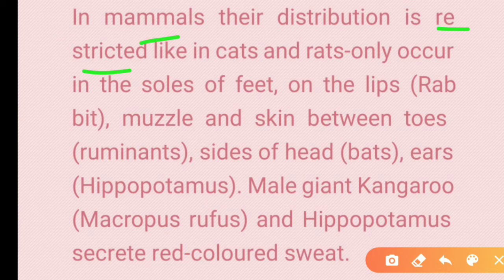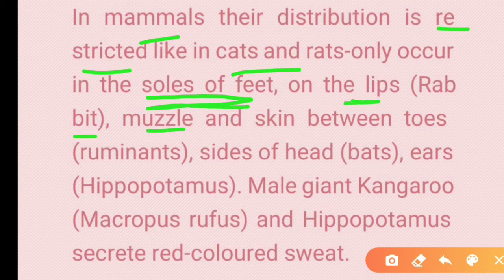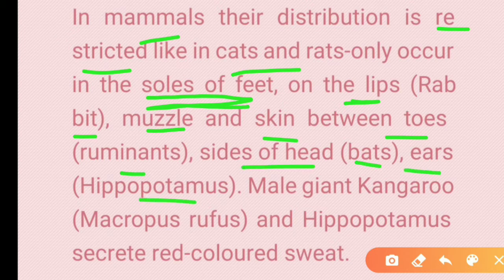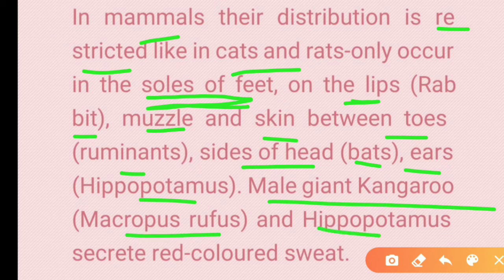For example, in dogs, sweat glands are restricted to the soles of the feet. In rabbits, they are in the lips. In cattle, between the toes. In ruminants, on the sides of the head. In hippopotamuses, sweat glands are found in the ears, and in the male giant kangaroo — Macropus rufus — they secrete red sweat.